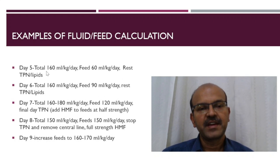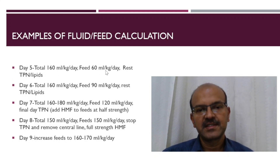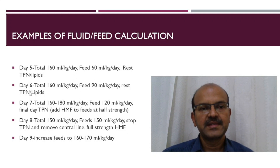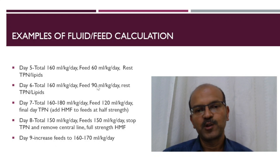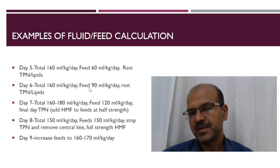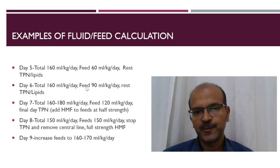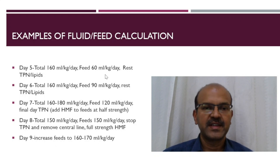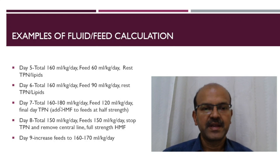On day 5, we have 160 ml total fluid. Feeds reach 60 ml and the rest is TPN and lipids. By day 6, the total is still 160 ml. We started increasing the feeds by 30 ml per kilo per day as the baby is more stable now and is tolerating the volume. The rest is TPN.